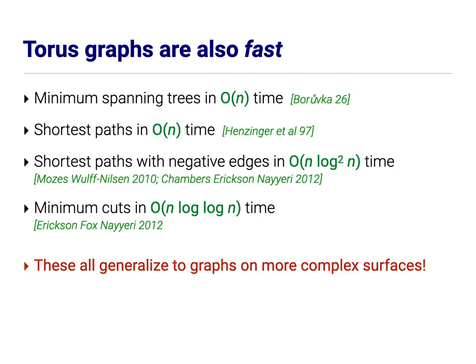Similarly, these properties imply fast algorithms for torus graphs. Minimum spanning trees in linear time, shortest paths in linear time, shortest paths with negative edges in near linear time, minimum cuts in near linear time. And again, with some hidden dependence on the genus, all of these results generalize to graphs on more complicated surfaces.